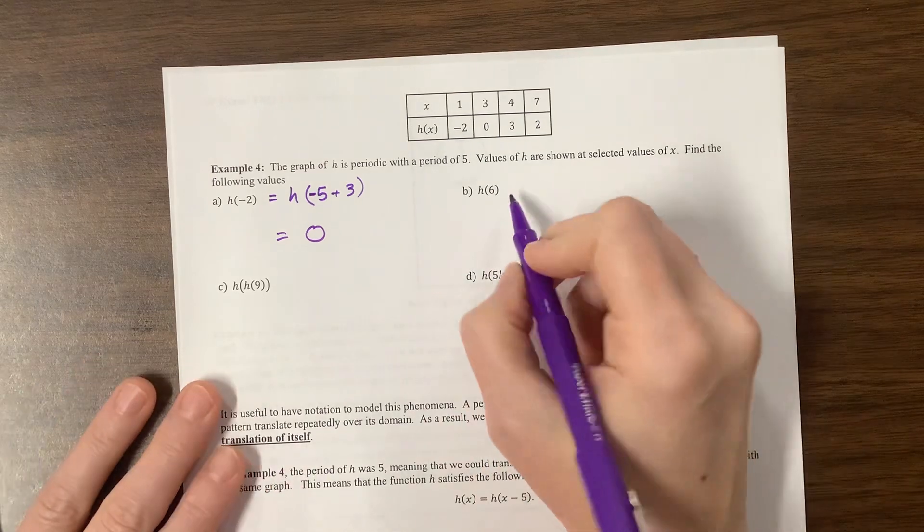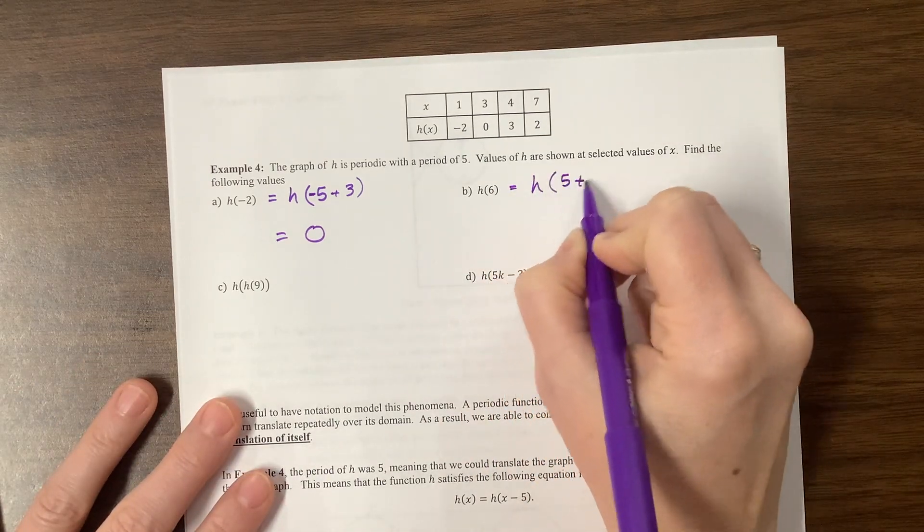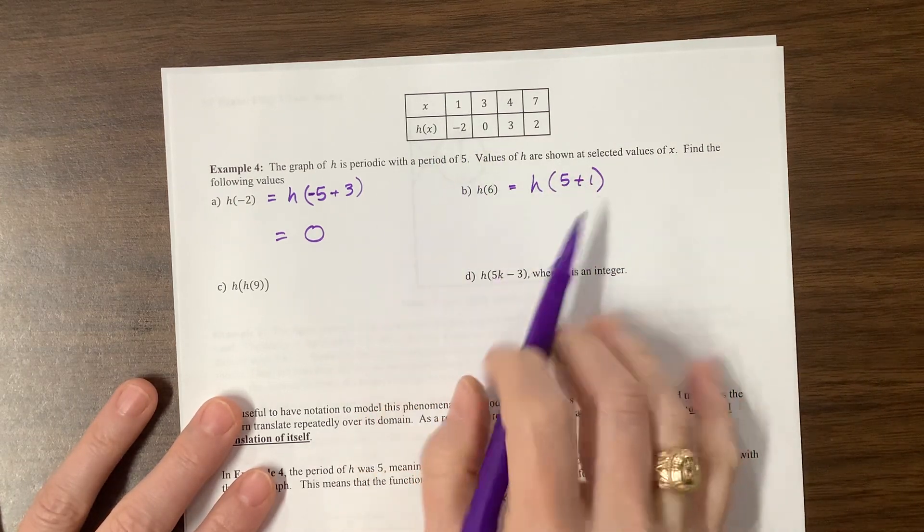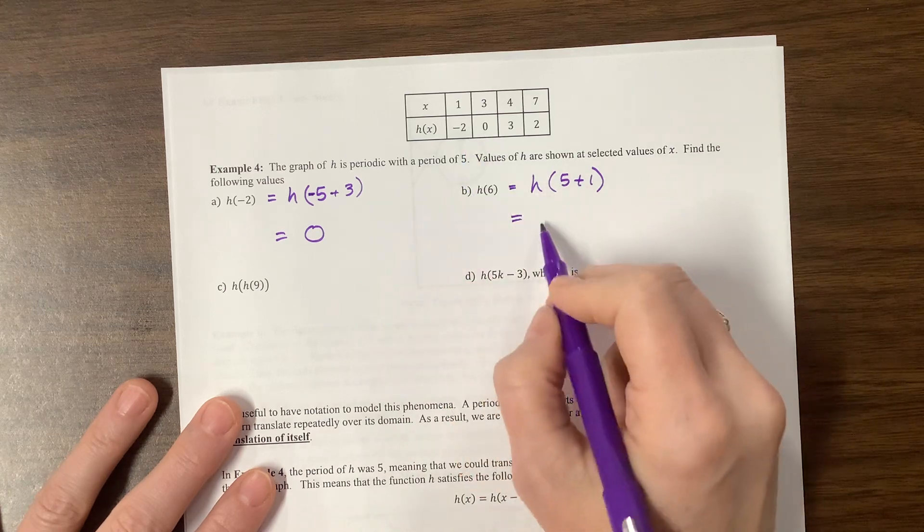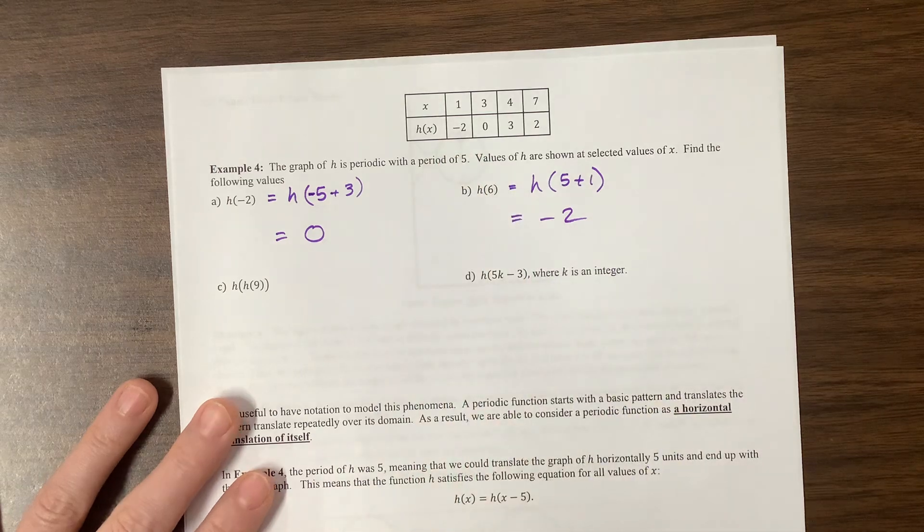The next one here, this H of 6 is going to be equal to H of 5 plus 1. So whatever happens at 1 will also happen 5 units later because our period is 5. And so at 6, we're going to get that same Y value of negative 2 that we had here at 1.